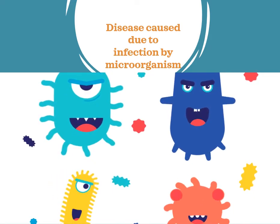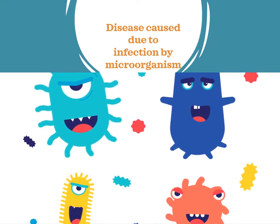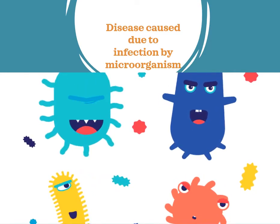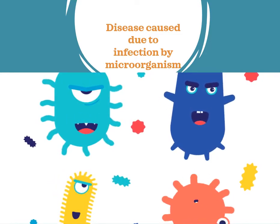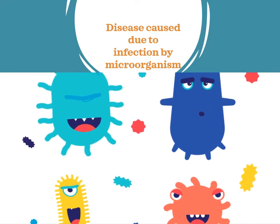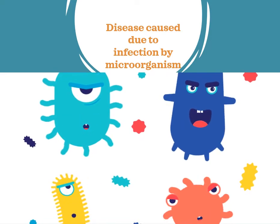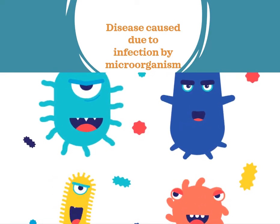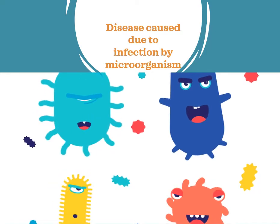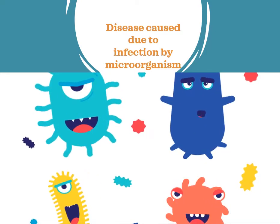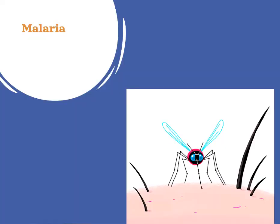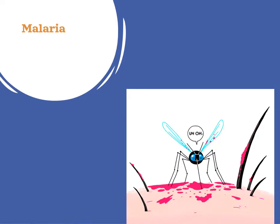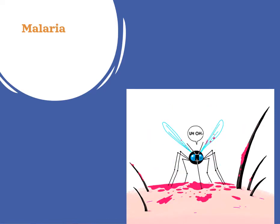Here is another video on 'Why Do We Fall Ill' and today's topic is diseases caused due to infection by microorganisms. Microorganism — micro means very small organism that we can see only with the help of a microscope. We cannot see these organisms, and this is the reason they can spread easily. Today we are going to discuss about malaria.